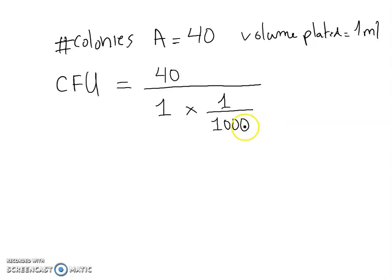That's it, and that will give you the number of colony forming units. Now mathematically, when you have 1 to 1000 in the denominator, when you have a fraction like that, it is the equivalent of saying or of writing 40 times 1000.